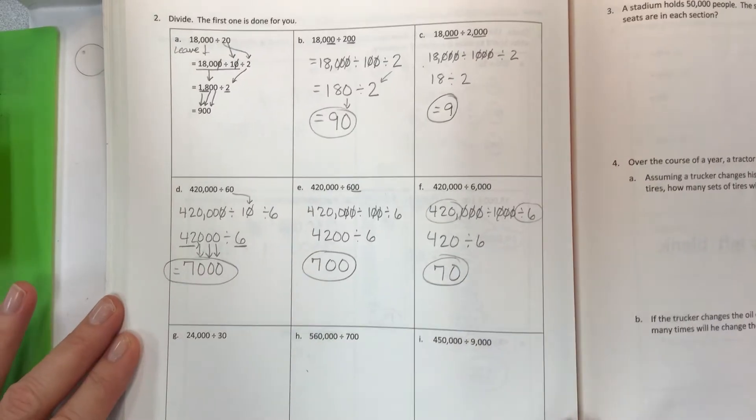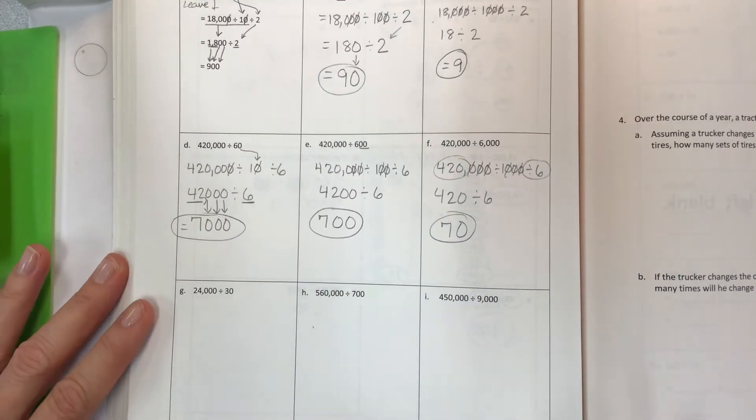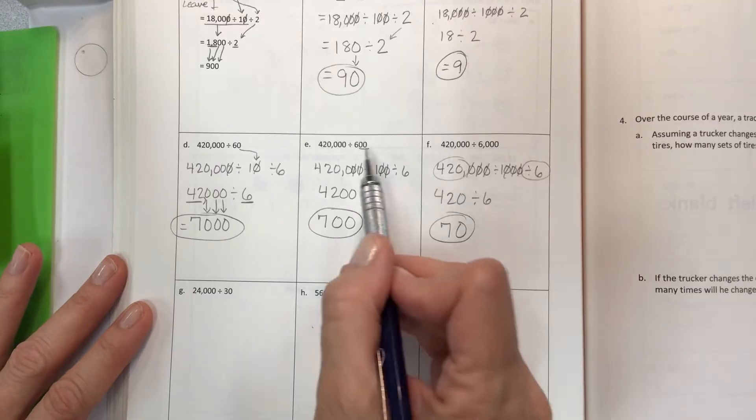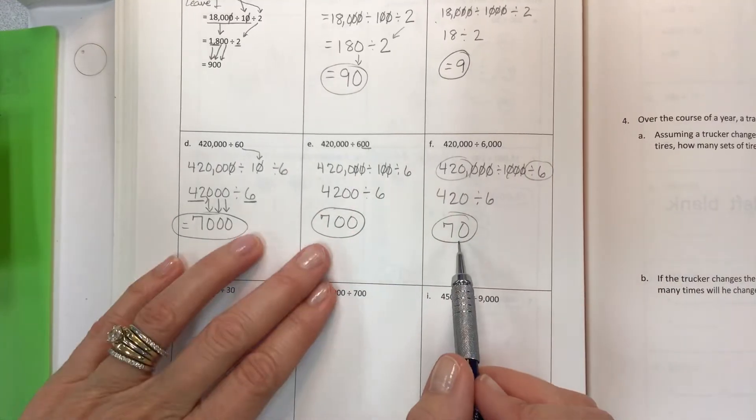See how the answer, the quotient, changes depending on the size of your divisor. As it got bigger, our answer got smaller.